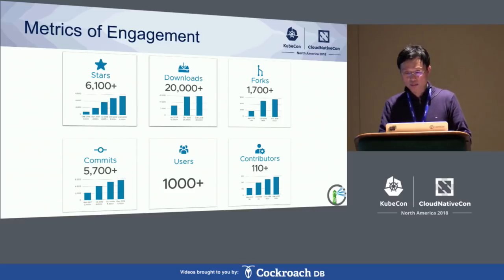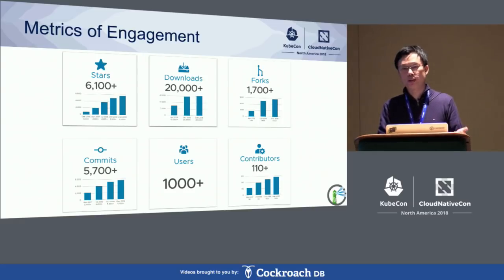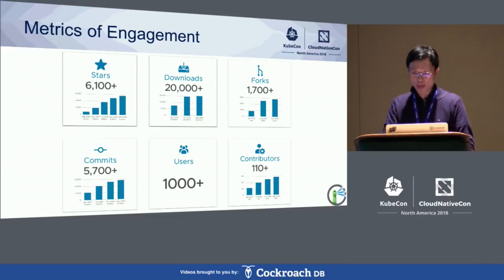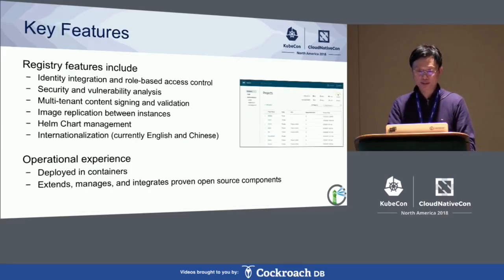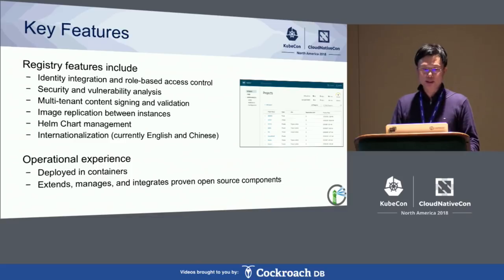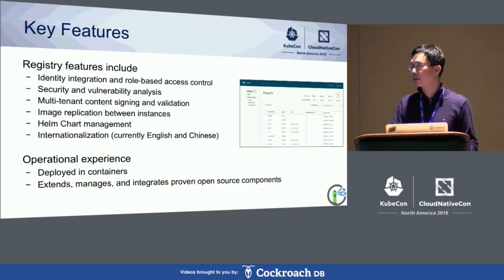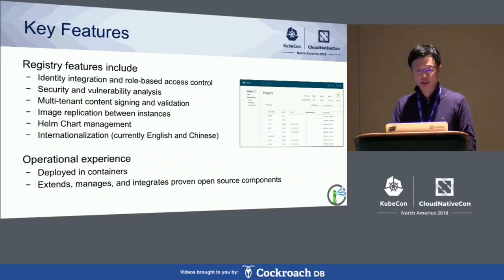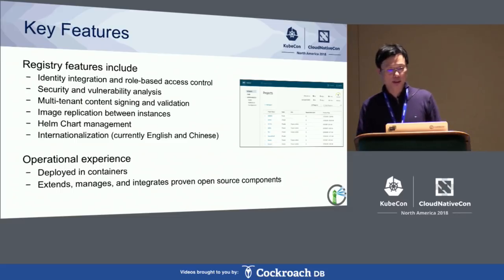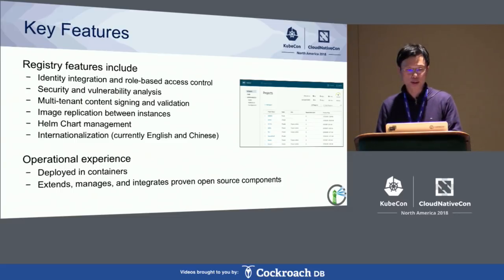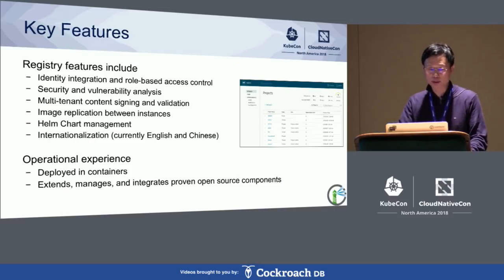We have more than 100 contributors coming from everywhere in the world. Many enterprise users, internet companies, and small startups are all using Harbor to manage their container images in their cloud environment. The key features of Harbor include identity integration and role-based access control (RBAC), security and vulnerability scanning and analysis, content trust signing and validation, and image replication across different locations and between Harbor instances.